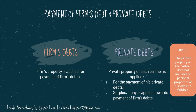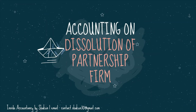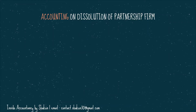Please note that the private property of the partner does not include the personal property of his wife and children. Private property means the property owned by the partner who is a partner in the partnership firm. At the time of dissolution, the assets are realized, liabilities are paid, and the balance, if any, is distributed between the partners in their profit sharing ratio. In case there is any deficiency, that shortfall is met by the partners.